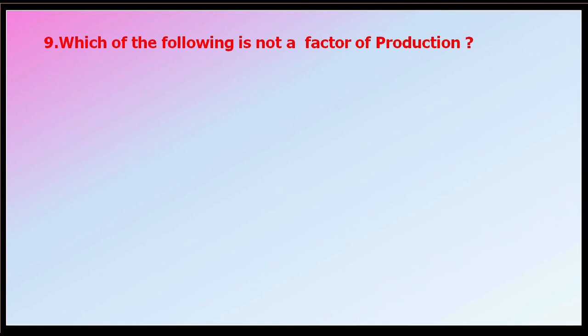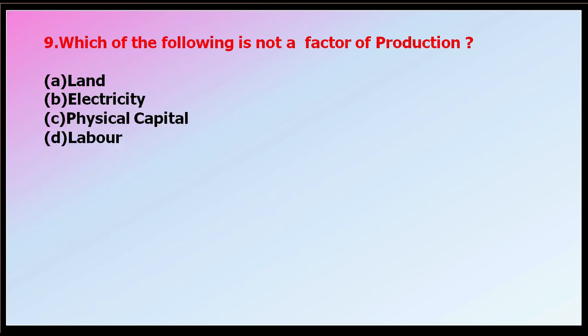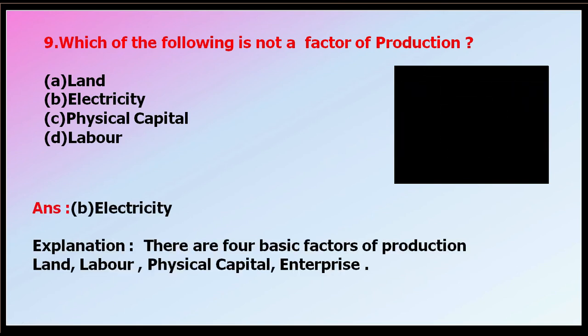Question number nine: which of the following is not a factor of production? Options: land, electricity, physical capital, or labor. The correct answer is electricity. The four basic factors of production are land, labor, physical capital, and enterprise or entrepreneur. Electricity is not a major factor of production.